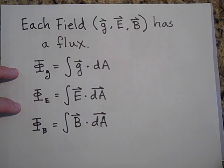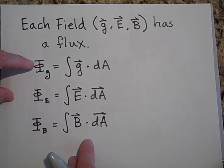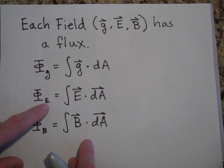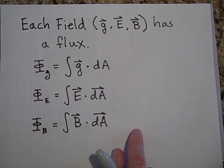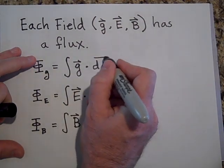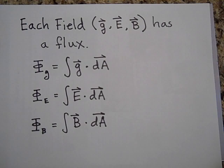They each have a flux attached to them. So flux, we give the symbol Φ (fee). This would be Φ_g for the gravitational flux, Φ_E for the electric flux, and Φ_B for the magnetic flux. But do you see how similar the formulas are? Each one is just the field—it's the integral of the field dot dA. That's a dot product.